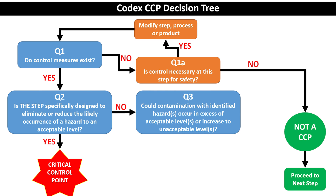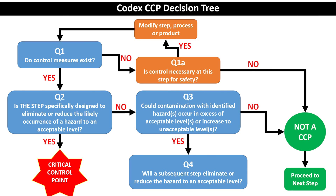If the answer to question 2 is no - for example, hot holding is not specifically designed to control microorganisms - you move to question 3: could contamination with the identified hazard occur at this stage at an unacceptable level? In almost every scenario the answer is yes, since contamination can occur at any stage. However, if the product is already packed and sealed in packaging, the answer could be no, and the step would not be a CCP.